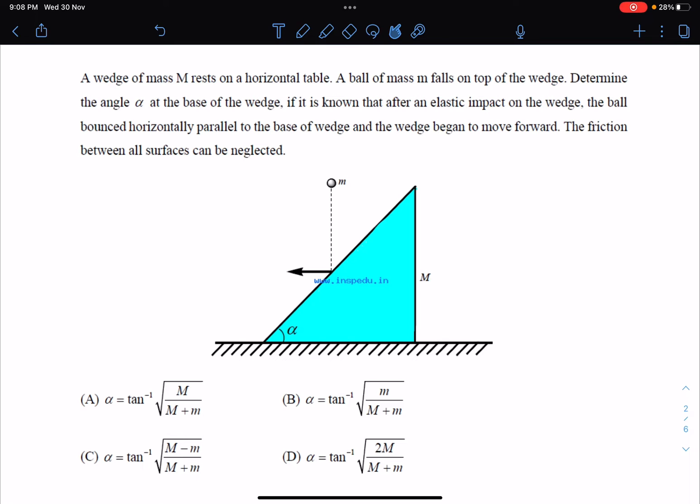It is known that after an elastic impact on the wedge, the ball bounced horizontally parallel to the base of the wedge and the wedge began to move forward. The friction between all surfaces can be neglected.